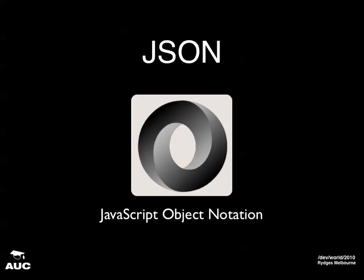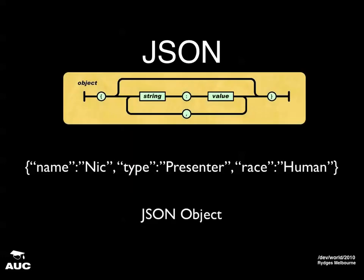JSON stands for JavaScript Object Notation. Basically it's a way of representing data or resources. JSON has a structure — you've got a string name which stores the name of the variable, and you have some sort of value. A value can be a string, an object, an array, a number, or a boolean. There's a list of value types on the JSON website. In this case, this is an object that defines me — I'm Nick, I have type presenter, and race human.